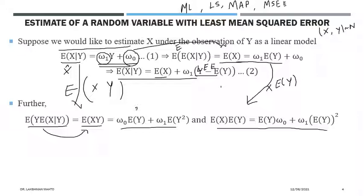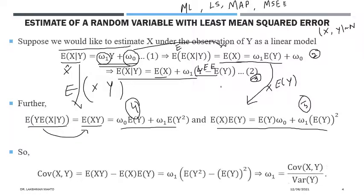We label these as equations 2, 3, 4, and 5 and utilize all of them. Covariance of two random variables X and Y is defined as E[XY] minus E[X]·E[Y]. Substituting from equations 4 and 5 and doing the subtraction, the omega_0·E[Y] terms cancel, leaving omega_1 times (E[Y²] − (E[Y])²), which is the definition of the variance of Y.